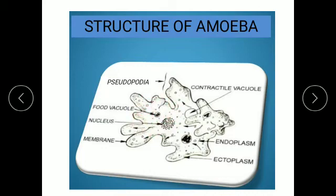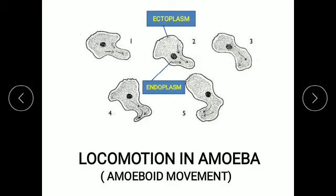Amoeba moves by stretching its cytoplasm into finger-like extensions called pseudopodia, or false foot. You can observe the locomotion in amoeba in this slide. When amoeba is to move, first ectoplasm extends and then endoplasm moves in, forming a pseudopodia. You can see the formation of pseudopodia here. This type of locomotion in amoeba is also known as amoeboid movement.